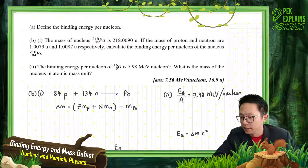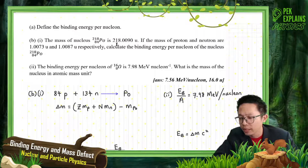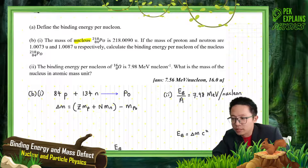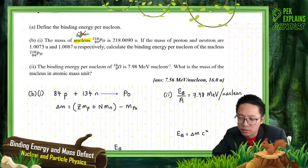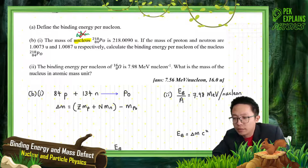Define binding energy per nucleon — you can find this in lecture video B1. The mass of the nucleus of Polonium is 218.0090 u. Note this is just the nucleus, not the atom, because we are doing nuclear physics which concerns only the nucleus, not the electrons.